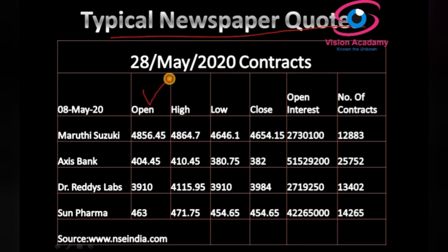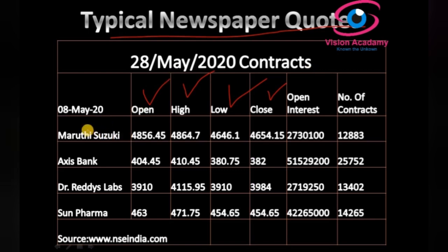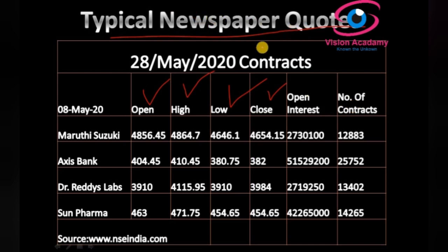Each terminology I will explain. These contracts — Maruti Suzuki, Axis Bank, Dr. Reddy's Lab, Sun Pharma — these four company stocks I have taken for the newspaper codes example.